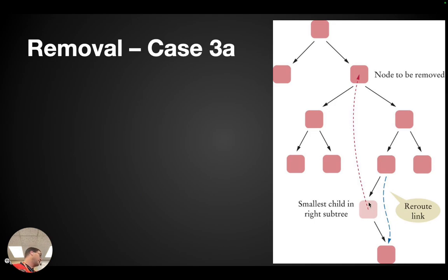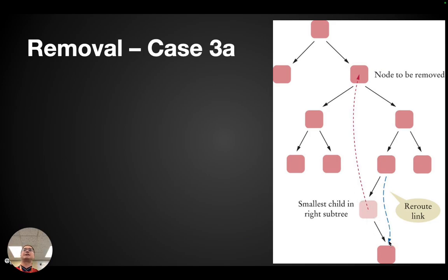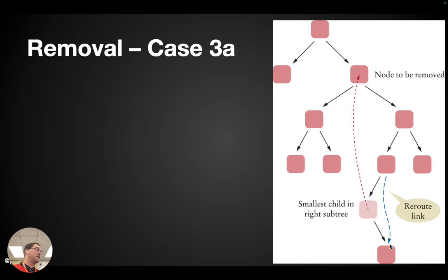The additional complication is the smallest child in the right subtree cannot have a left child — because if so, that child would be the smallest. But it might have a right child, and if it does, we can't lose this child and this entire potentially large subtree. So we need to make sure that the smallest child's parent's left child becomes the smallest child's right child. You should be confused by now — this is complicated.